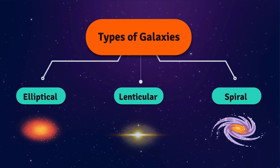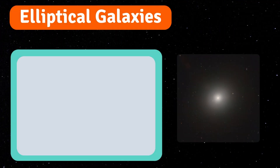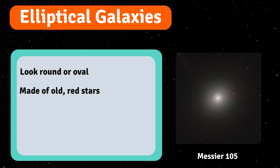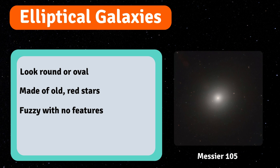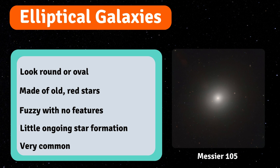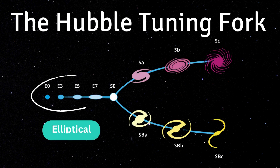The three types are elliptical, lenticular, and spiral. Elliptical galaxies look round or oval — shaped like balls or pebbles. They are made up of old red stars, appear fuzzy, and have no distinct features. They have very little dust or gas, so they cannot form many new stars. Ellipticals make up about half of the galaxies we observe, and some of the largest galaxies ever seen are ellipticals. On the Hubble Tuning Fork Diagram, they sit along the section labelled E0 to E7 — some are more circular (E0), while the most elongated ones are E7.